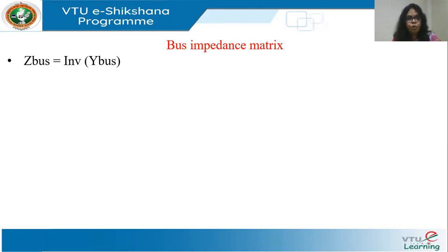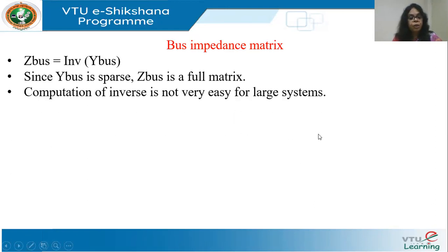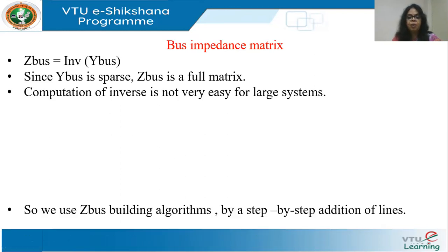From a mathematical point of view, if the matrix is ill-conditioned, the inverse may not be possible to evaluate. So in such cases we have to build the Z bus using a different method. Also, Y bus is sparse whereas Z bus is a full matrix — the number of non-zero elements in Z bus is many, whereas in Y bus you have very few non-zero elements because Y bus is formed entirely based on connectivity. Computation of the inverse is not easy for large systems, so we use the Z bus building algorithm, which is a step-by-step addition of the lines of the system.